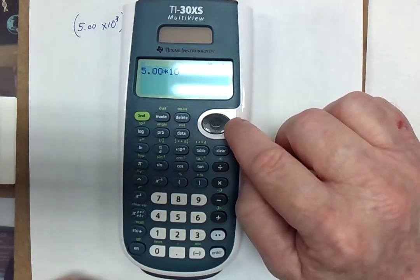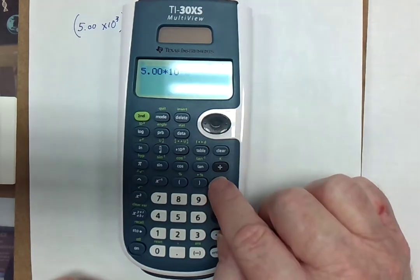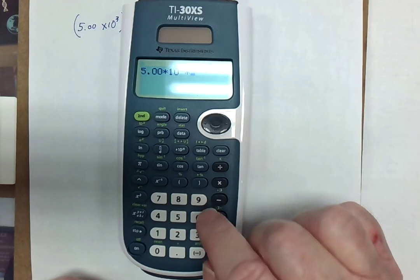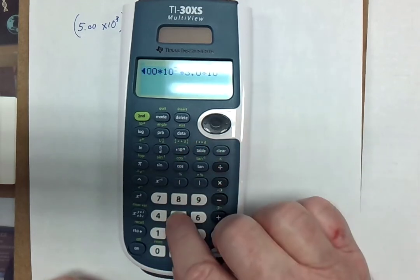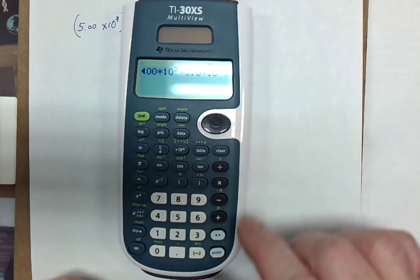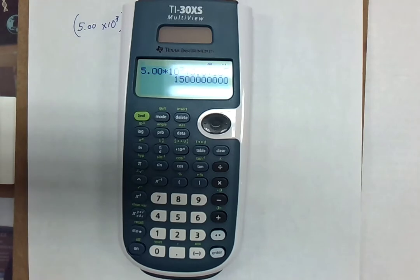But then, I have to use this control up here and put a space in before I put multiplied by 3.0 times 10 to the fifth, and put a space out there, hit enter, and get the answer.